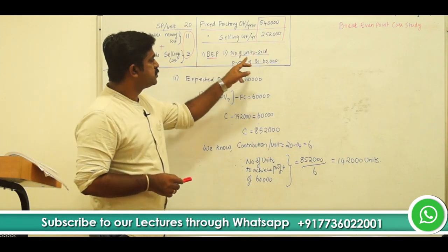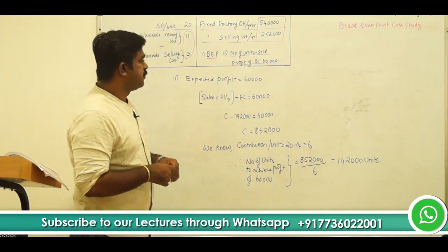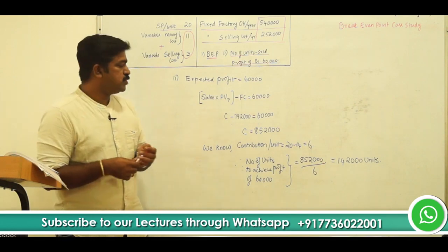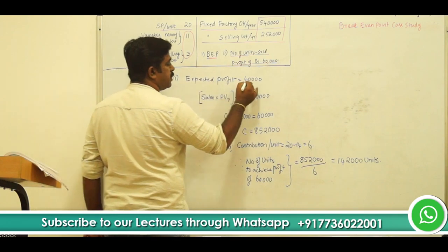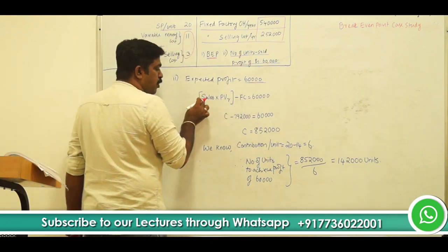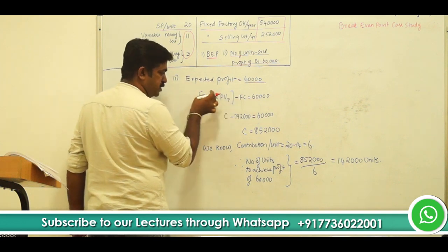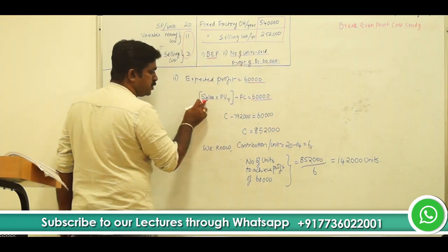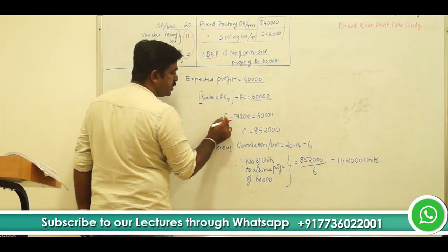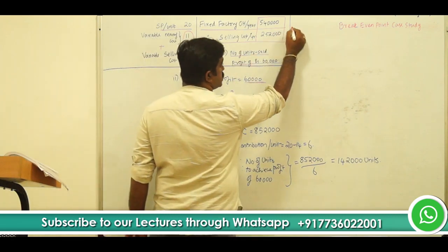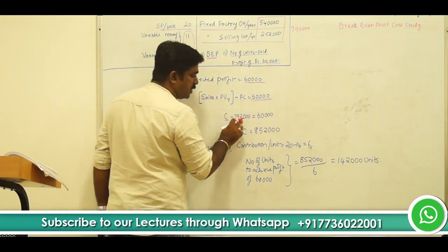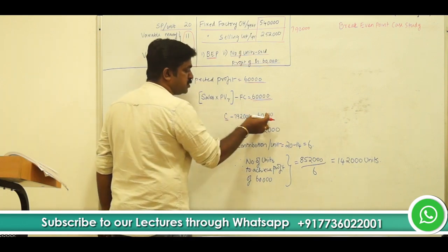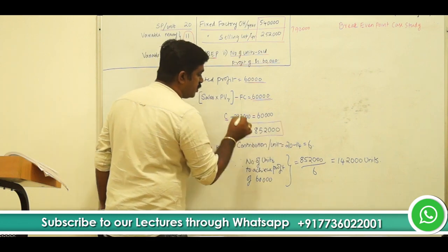The second question is: how many units should be sold so that a profit of Rs. 60,000 can be achieved? From contribution, if you subtract fixed cost, you want the profit to be 60,000. Contribution C minus fixed cost of 7,92,000 equals 60,000. Shifting 7,92,000 to the right-hand side: 60,000 plus 7,92,000 gives contribution equals Rs. 8,52,000.